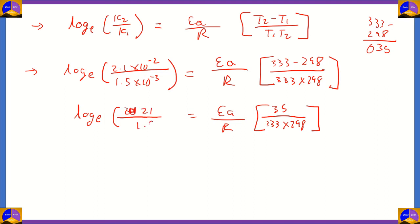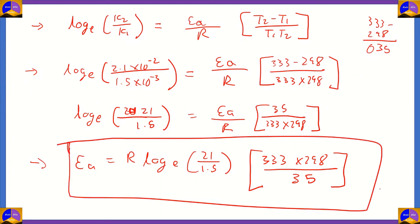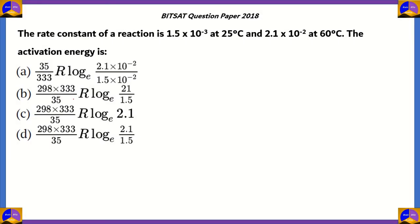Rearranging for activation energy: Ea = R × ln(21/1.5) × (333×298)/35. This is the correct expression for activation energy. Looking at the options, option B matches this expression with 298×333 in the numerator, 35 in the denominator, R, and ln(21/1.5). So option B is the correct option.